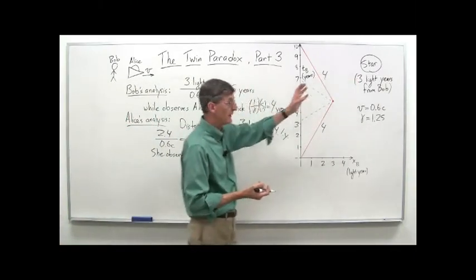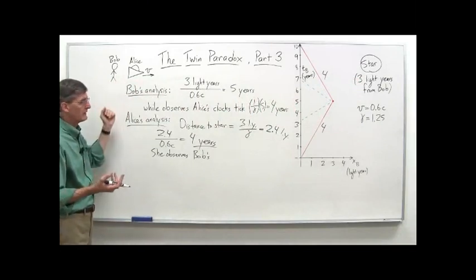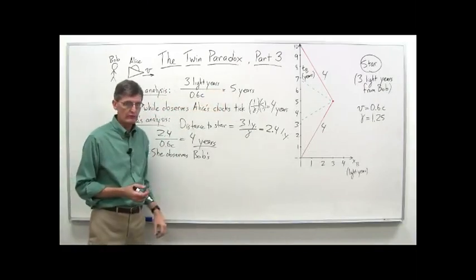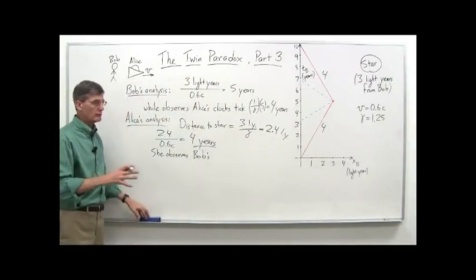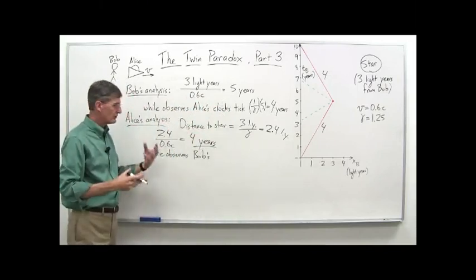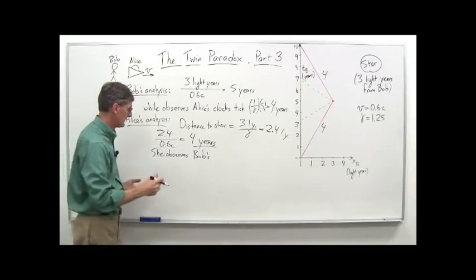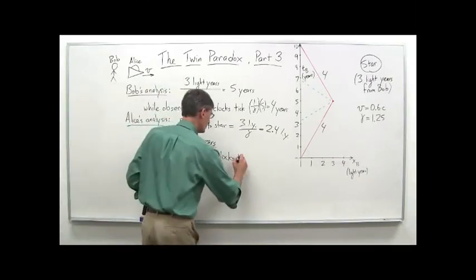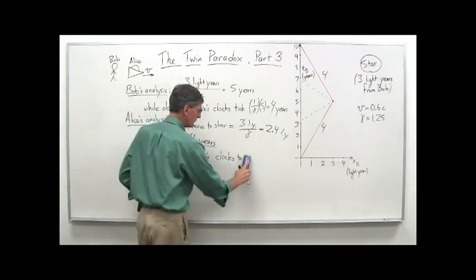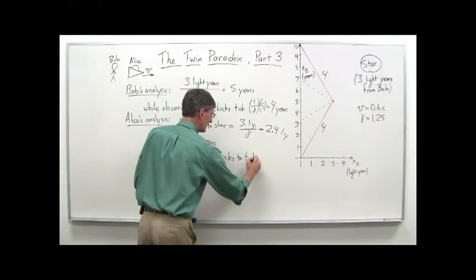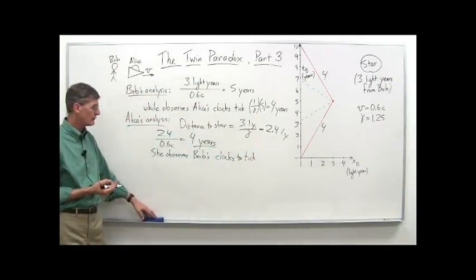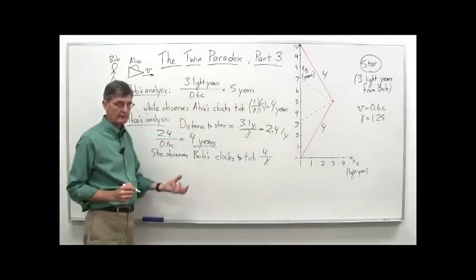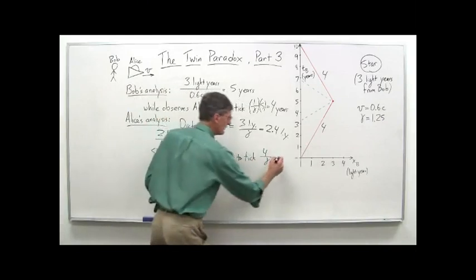There's going to be a clock at the star and a clock back on his home planet. They're both synchronized in his frame of reference - they're part of his lattice of clocks. In general, wherever they are in his lattice of clocks, when Alice observes one of his clocks, she will observe the clock ticking more slowly than hers. So she observes Bob's clocks to tick - how many years? It's the gamma factor. Her clocks tick for four years, so it's four over gamma - she sees time dilation of his clocks - and four divided by 1.25 is 3.2 years.